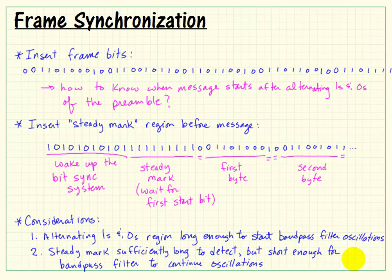But the steady mark region has two points as well. It needs to be sufficiently long to allow easy detection of that first start bit, or the first time that we see a zero.